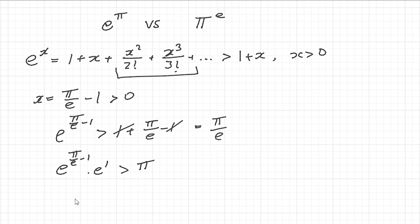Now I can bring these two together and this is just e to the pi over e because the minus 1 and the plus 1 here cancel and that's bigger than pi. And now all I've got to do is raise both sides to the power of e and I get e to the pi is strictly bigger than pi to the power of e. And that concludes our proof.